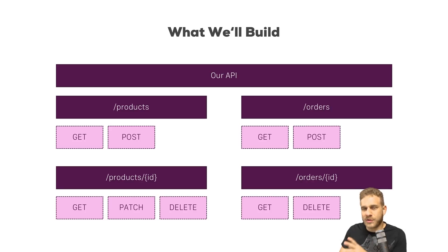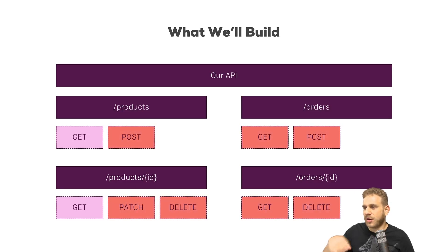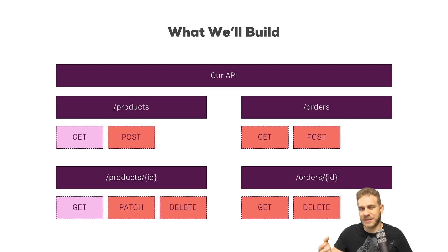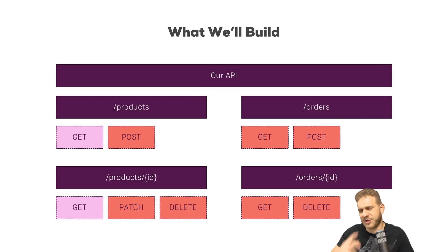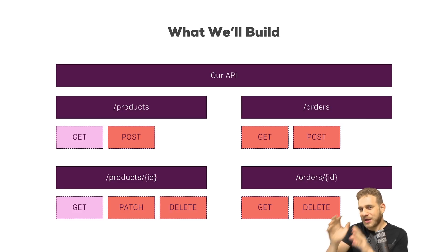We'll also add authentication to make sure that some of these routes and endpoints are protected, so that only logged-in users can access them. You will also learn how to log users in when building a RESTful API, because we can't use sessions — remember from the last videos — so that won't work. That is what we're going to build, step by step, starting right now.